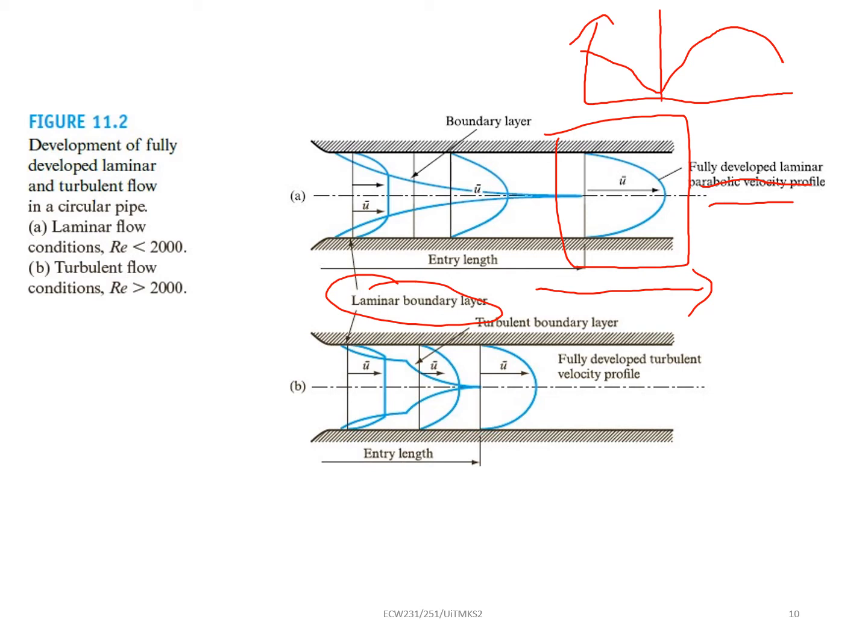Then for B, it is turbulent flow where the Reynolds number is more than 2000. For A, it is laminar flow, less than 2000 for Reynolds.